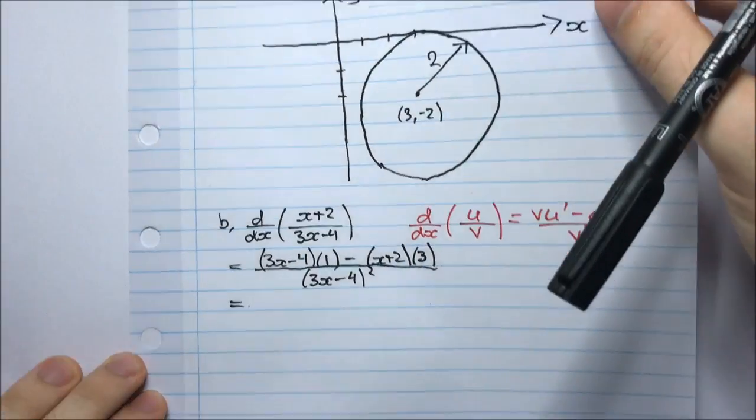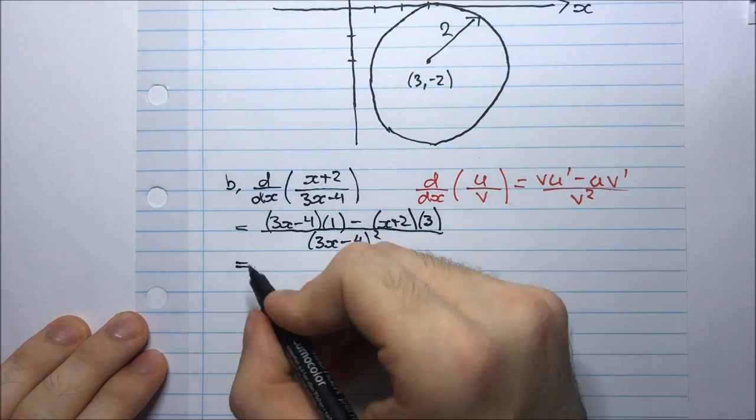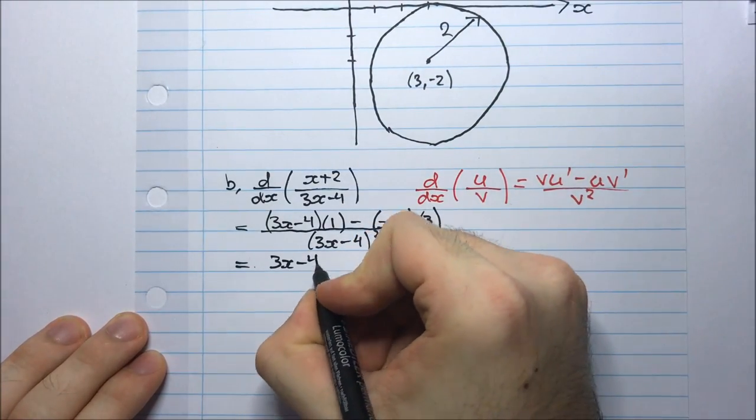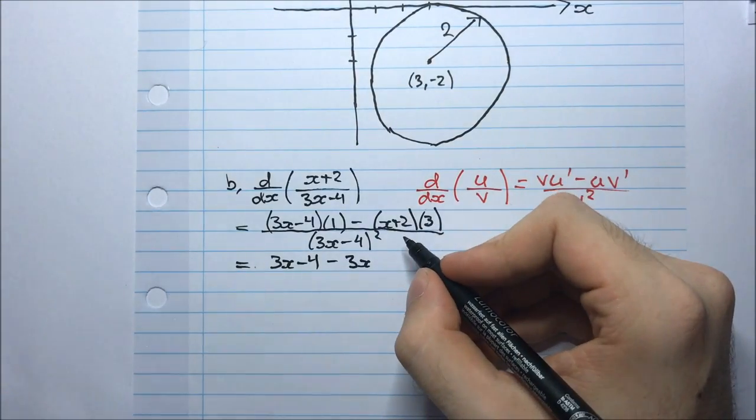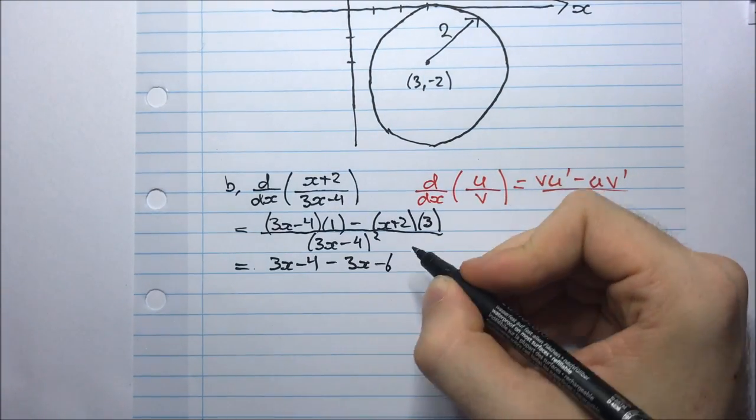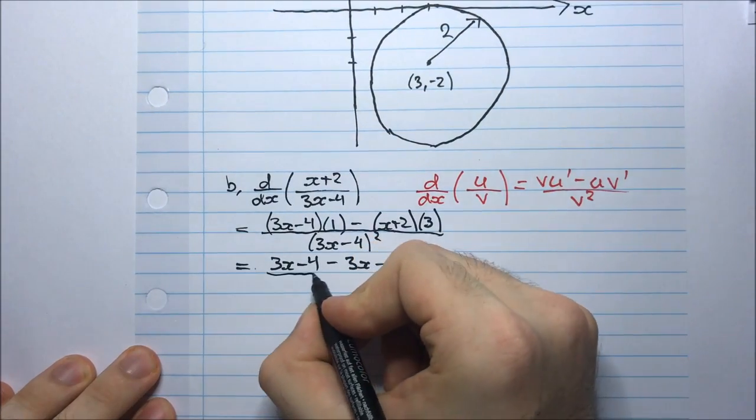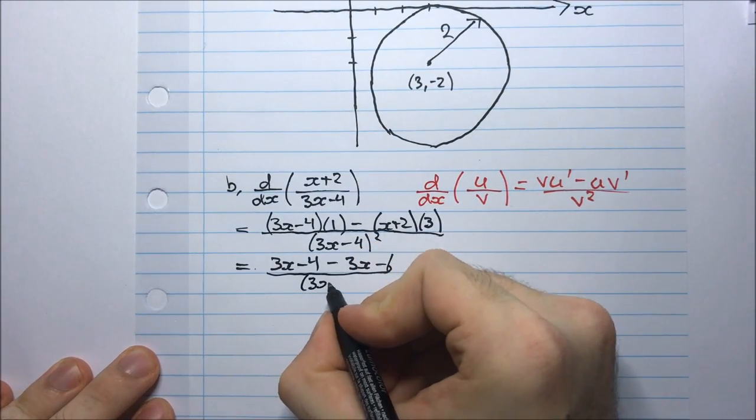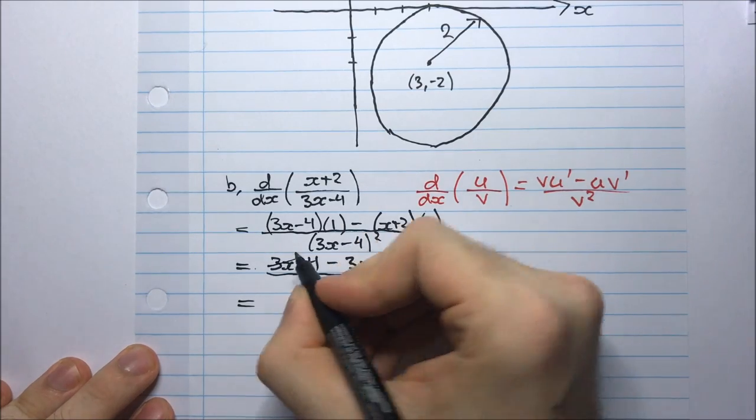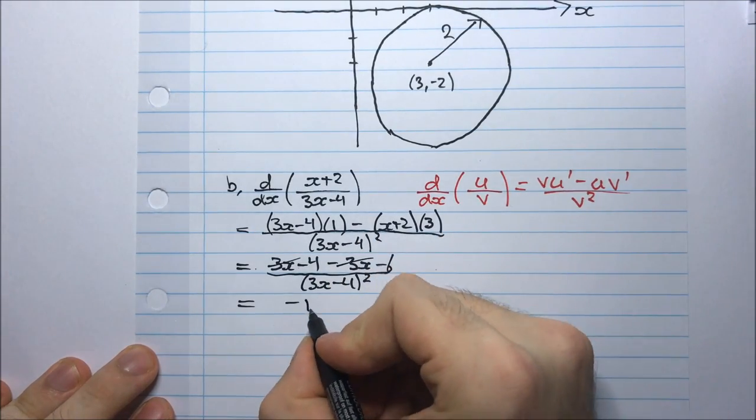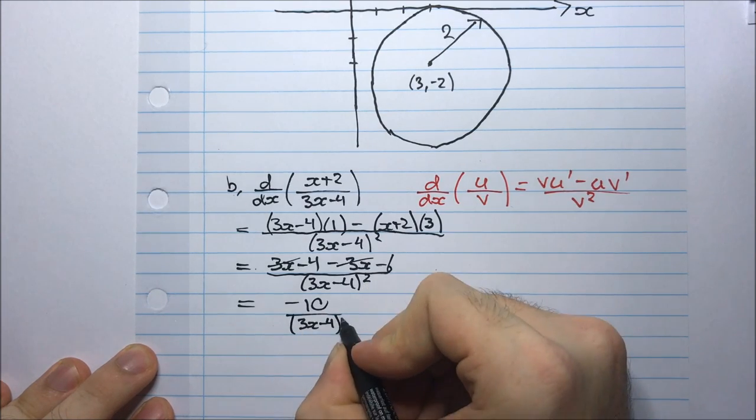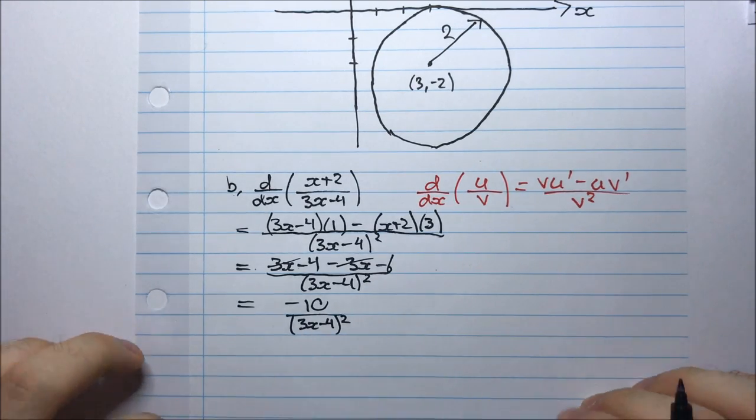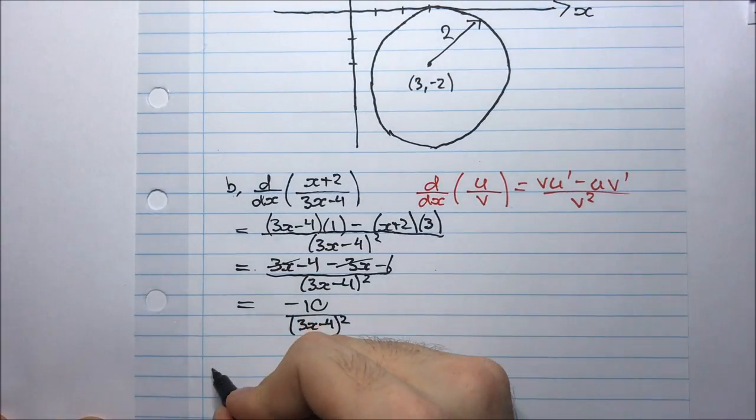So now I just have to simplify a little bit. This is 3x - 4. This is going to be -3x and it will be -6, dividing by (3x - 4)². And so this 3x and this -3x cancel. I'm left with -10/(3x - 4)². And that should be your final answer.